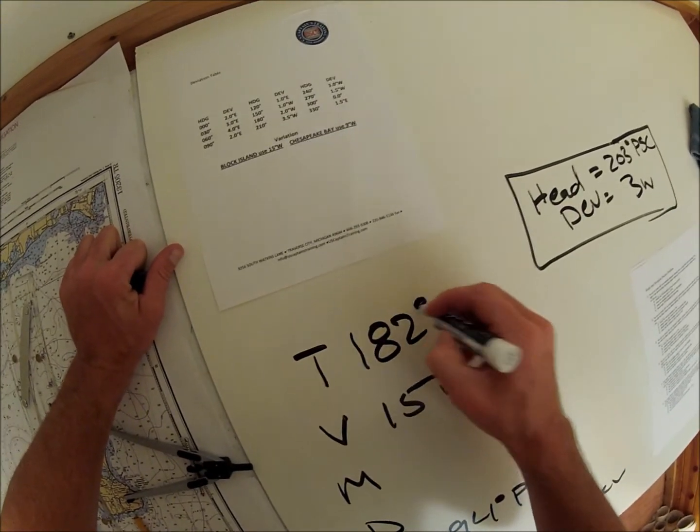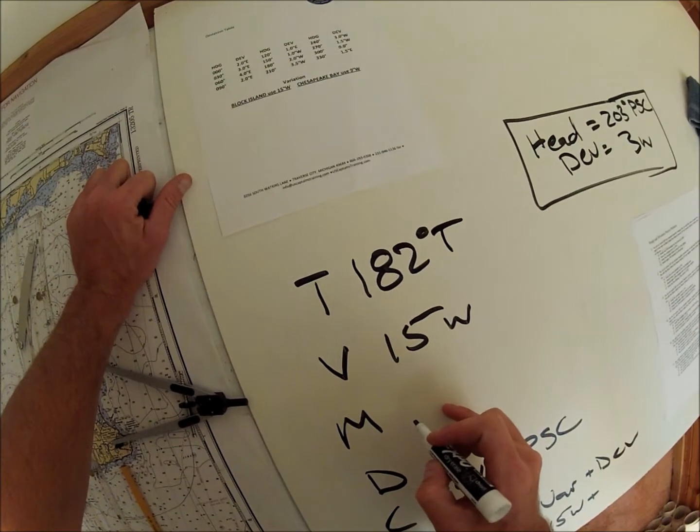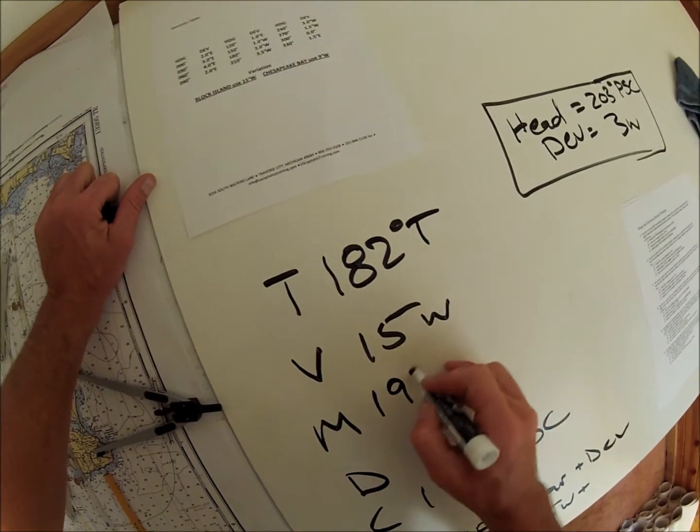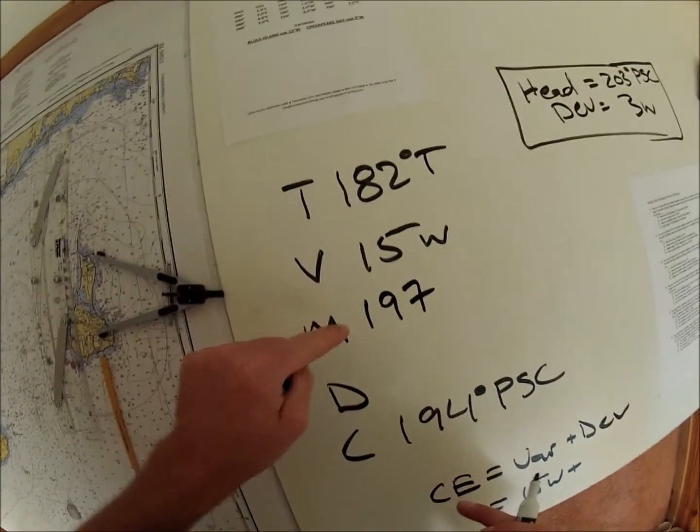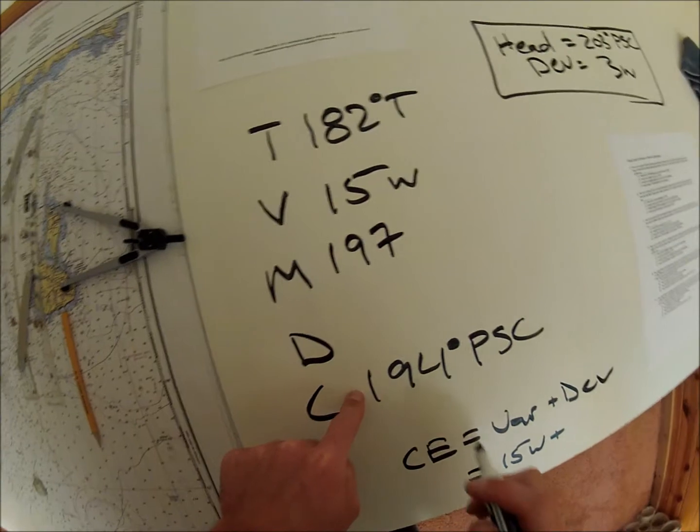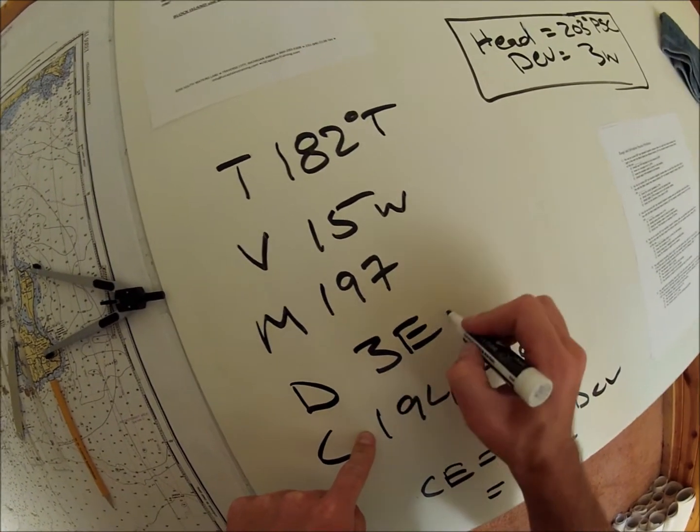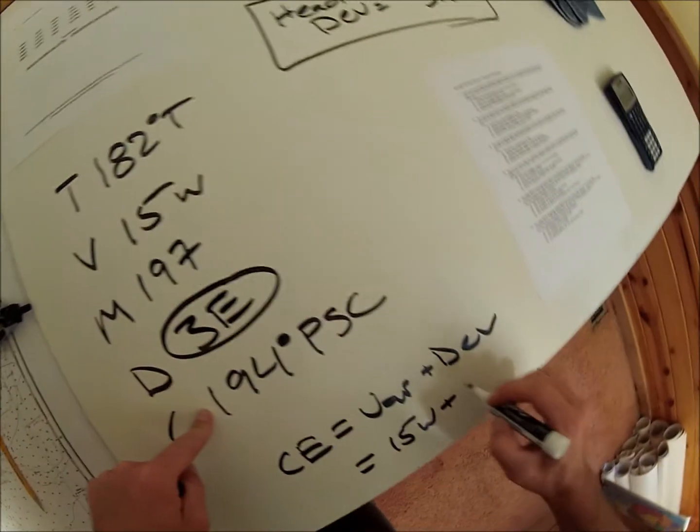Okay, here's 181. I'm seeing 182. 182 degrees true plus 15, 192, 197. So to get from 197 to 194, we need to subtract 3. So we get 3 east. That's what we're calculating.